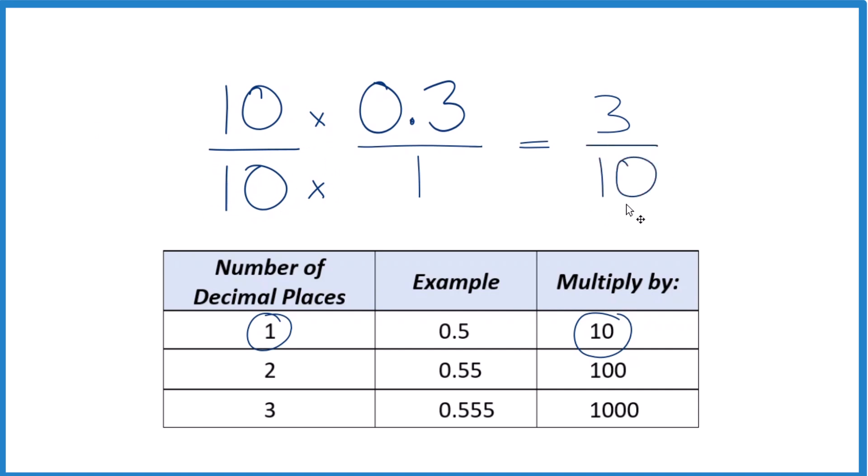And the reason we needed to multiply the denominator by 10 is because 10 divided by 10 is 1. So when we multiply this by 1, we don't change the value, just the way it's written.